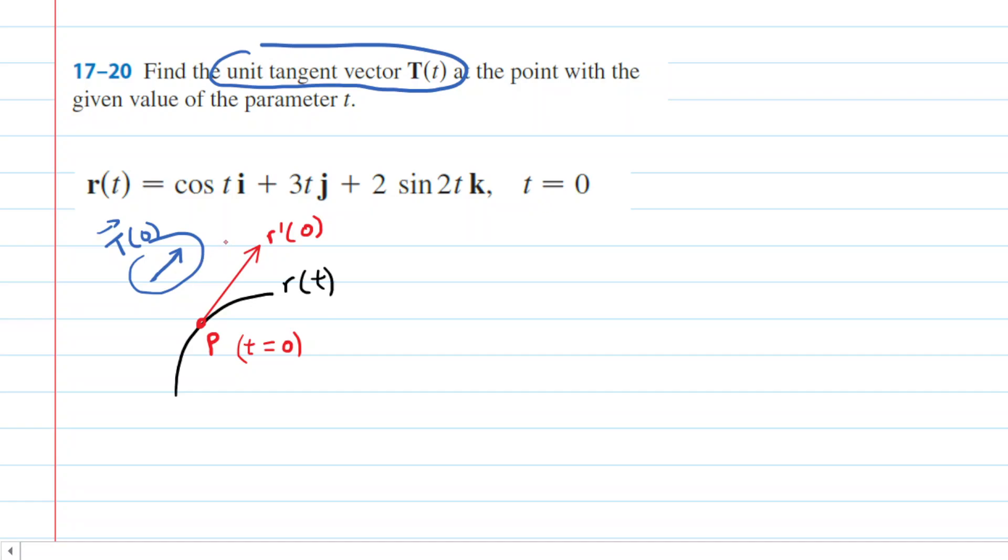But before we can do that, we need to find that red tangent vector. So, that is our first step. We're going to calculate r prime of 0. We'll do r prime of t first, and then plug 0 in.